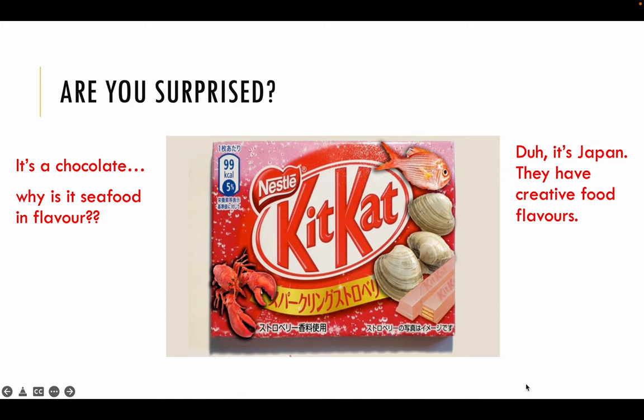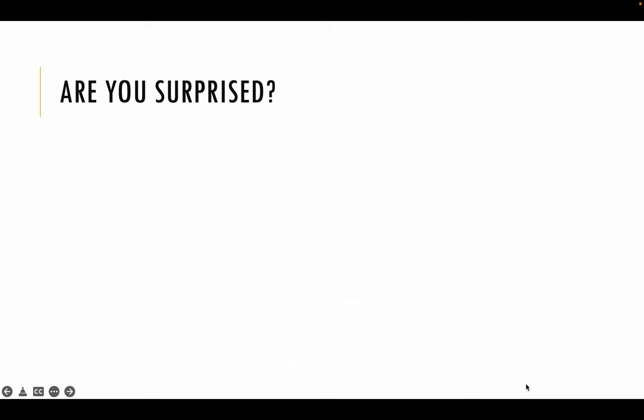One is based on what we expect but something else happened — so the idea of expectation versus reality — versus the idea of prior knowledge that Japanese people are very experimental with their food.